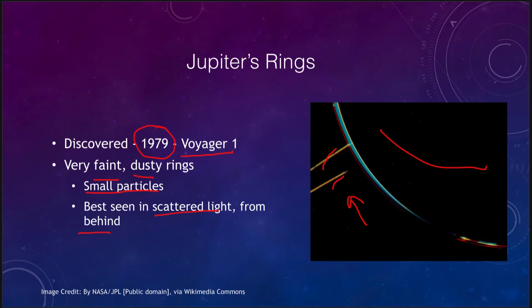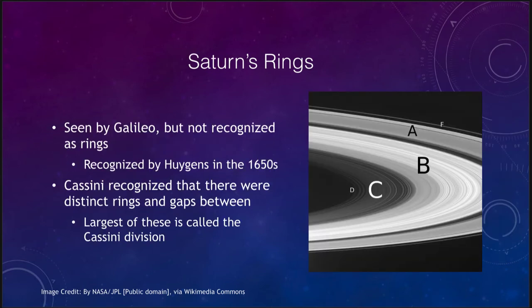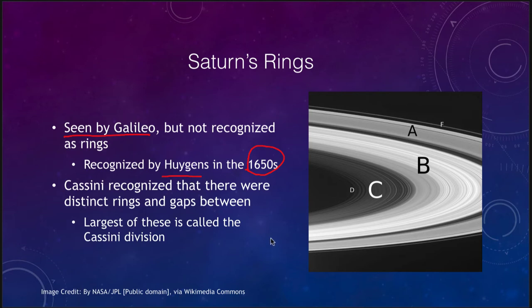What we really want to look at are the rings of Saturn, which have a lot more detail. They were actually seen by Galileo, but not recognized as rings — only as a blob on each side of the planet that sometimes disappeared. By the 1650s, when telescopes got a little bigger, Huygens was able to recognize them as a ring system. Around that time or a little later, Cassini recognized that there were distinct rings, not just a single ring, with gaps between them.